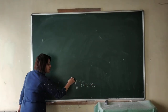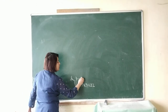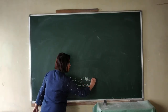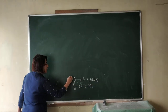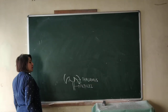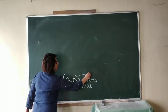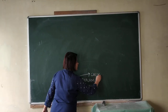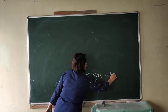The cup-shaped structure on the pedicel is known as the thalamus. The green leaf-like structure forms the first whorl of the flower. It is known as the calyx, which consists of sepals.